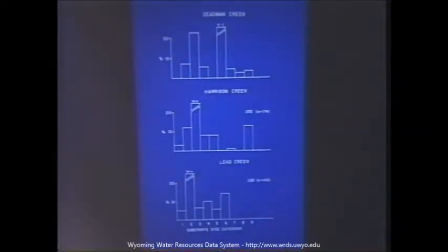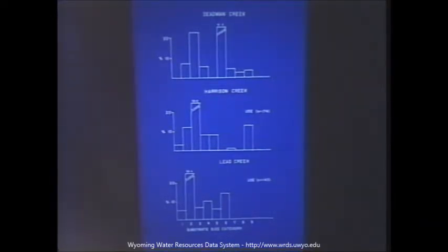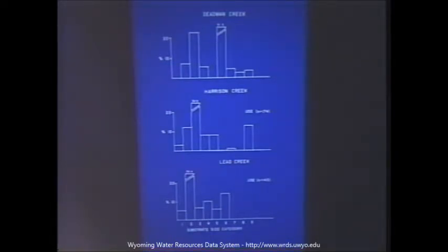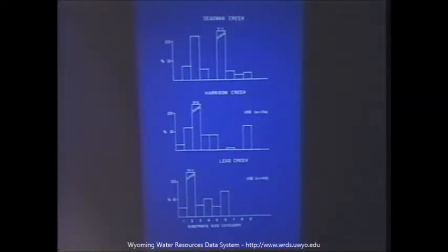The third variable is substrate. These are the substrates associated with fry positions at each of the three sites: Deadman Creek (top), Harrison Creek (middle), and Lead Creek (bottom). The x-axis shows substrate size categories from one to nine — one being very fine substrates like silts, ranging up to very large boulders at number nine. The y-axis is the percent of fry observed in association with a particular substrate type. As we can see, the substrates being used by Colorado River cutthroat trout fry were quite different. In Deadman Creek, a majority of fry were using rubble substrates about six to ten inches in diameter, whereas in Harrison and Lead Creek they're using considerably smaller substrate sizes.